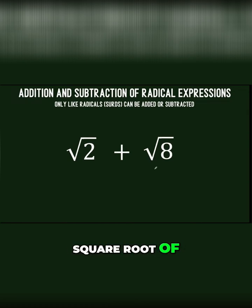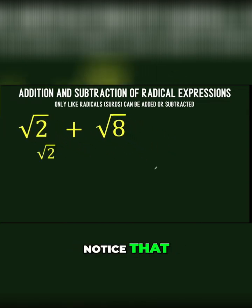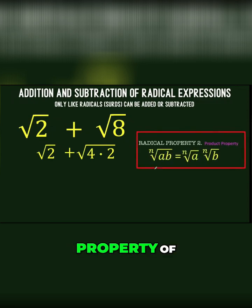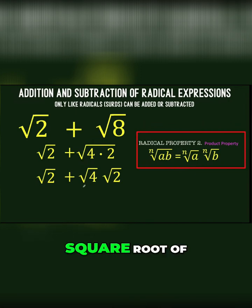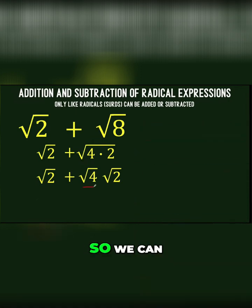In the case of square root of 8, we can still simplify that. Notice that square root of 8 can be written as square root of 4 times 2. In applying the product property of radicals, we can separate this into two radicals. And we know that the square root of 4 is equal to 2. So we can still write this as 2 square root of 2.